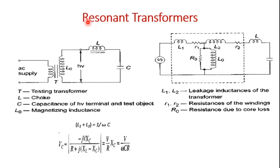Now we are going to discuss the resonant transformer, which is the second concept. The circuit diagram and equivalent circuit are shown here. The equivalent circuit consists of the leakage reactance of the winding, the resistance of the winding, the magnetizing reactance, and also a shunt capacitance across the output terminal due to the high voltage terminal and the test object.